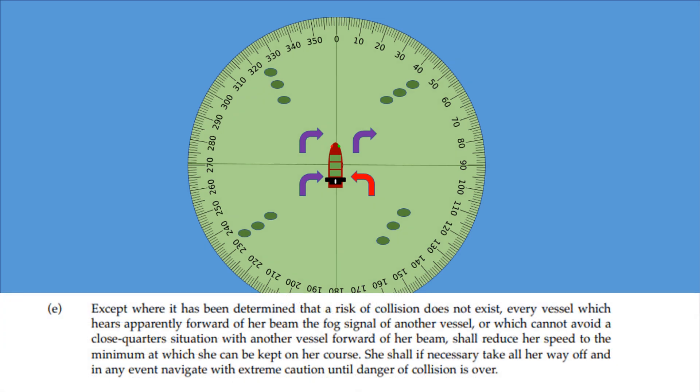Except where it has been determined that a risk of collision does not exist, every vessel which hears apparently forward of her beam the fog signal of another vessel, or which cannot avoid a close quarter situation with another vessel forward of her beam, shall reduce her speed to the minimum at which she can be kept on her course. She shall, if necessary, take all her way off and in any event navigate with extreme caution until danger of collision is over. So, except where it has been determined that a risk of collision does not exist, the only way we can do this in restricted visibility is with radar.